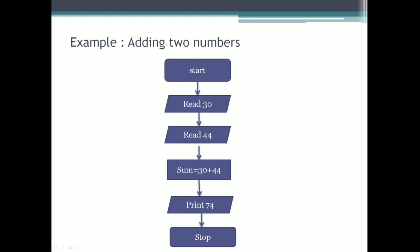Here is an example of the flowchart for adding 2 numbers. First we have the start, represented by the rounded rectangle. Just after start we read the 2 numbers, 30 and 44, which is represented with a parallelogram because they are the inputs. Then we find out the sum of 30 and 44, which is represented in a rectangle box because it is a process. After finding the result we print it, also represented with a parallelogram. Finally, we use the rounded rectangle to indicate the end of the flowchart.